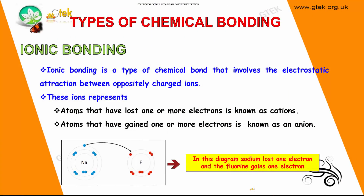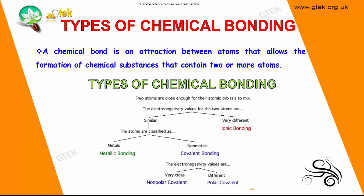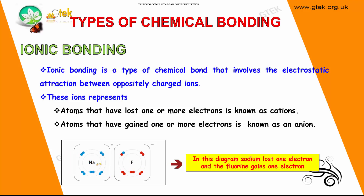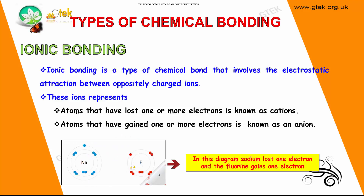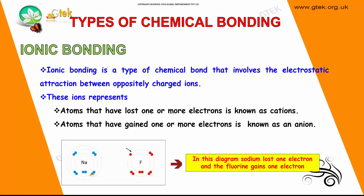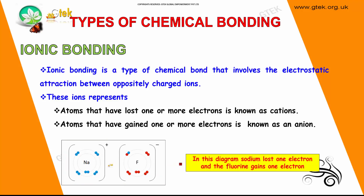We will talk about ionic bonding. Ionic bonding happens when the electronegativity values of 2 atoms are different. It is a chemical bond that involves the electrostatic attraction between oppositely charged ions — one positive and one negative. Atoms that have lost one or more electrons are called cations, and atoms that have gained one or more electrons are called anions. Here, sodium loses one electron and fluorine gains one electron, forming a cation and an anion.